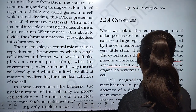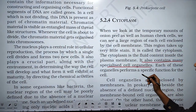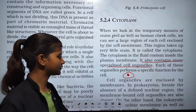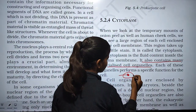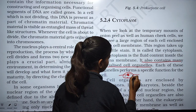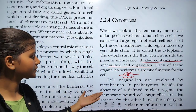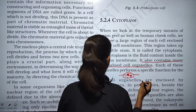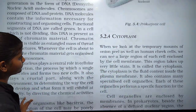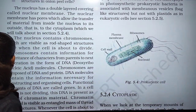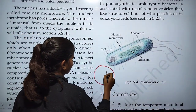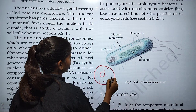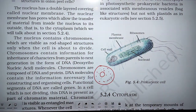The cytoplasm also contains many specialized cell organelles. In the cytoplasm there are many cell organelles — this one is the nucleus, this one is the plasma membrane, and inside the plasma membrane the cytoplasm is present. In the cytoplasm there are many types of organelles present.